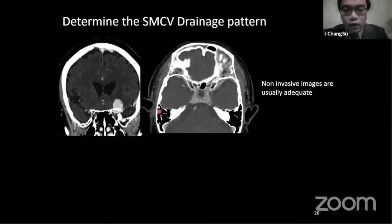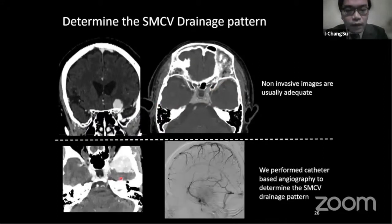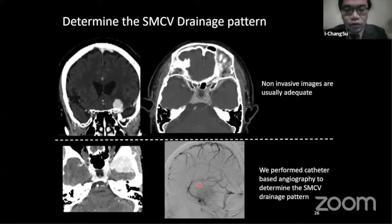Accurate determination of this drainage pattern is important. In our practice, if the superficial middle cerebral vein is easily traceable in CT scans, we will not perform catheter angiography. However, if the tumor masks the drainage pattern of this vein, we will usually perform conventional angiography to determine the exact drainage pattern.